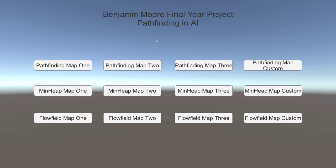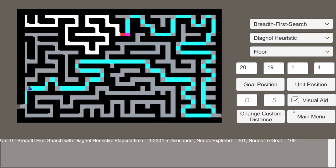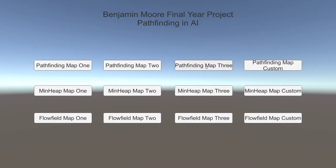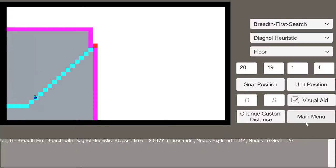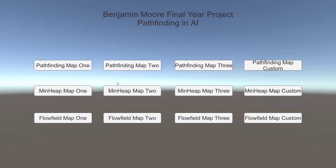What we have here are four different maps. We have Map 1 which is the Labyrinth Map, Map 2 which is the maze map, Map 3 which is the terrain map, and we have a custom map which you can just play around with and do whatever you want. All the maps with the MinHeap implement the Minimum Binary Heap Optimization Technique. And then these maps all implement the Flowfield algorithm.